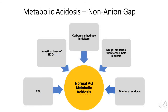Disorders that lead to a metabolic acidosis but have a normal anion gap include renal tubular acidosis, GI loss of bicarbonate, use of carbonic anhydrase inhibitors, and exposure to other medications. Excess chloride administration, such as with normal saline, can also lead to a non-gap metabolic acidosis.